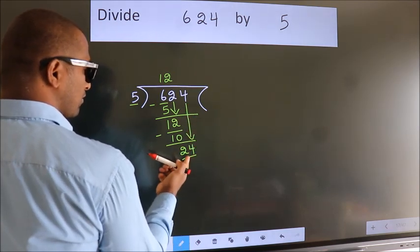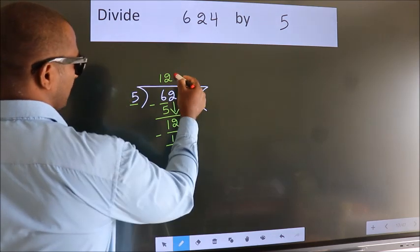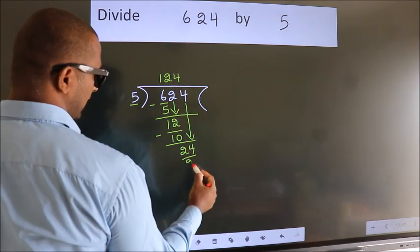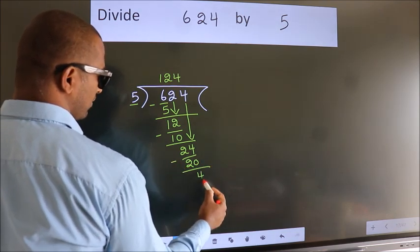A number close to 24 in the 5 table is 5 fours 20. Now we subtract. We get 4.